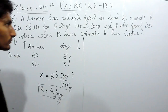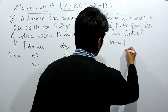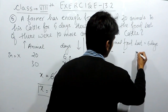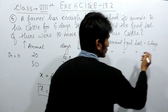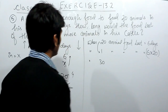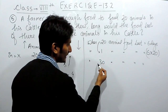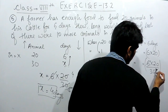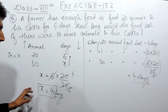The second method: when there are 20 animals, food lasts for 6 days. For one animal, the food will last 20 times 6 = 120 days, because as animals decrease, days must increase (inverse proportion), so we multiply by 20. When the animals are 30, since the number of animals increased, the days must decrease, so we divide 120 by 30. This simplifies to 4 days — the same answer.